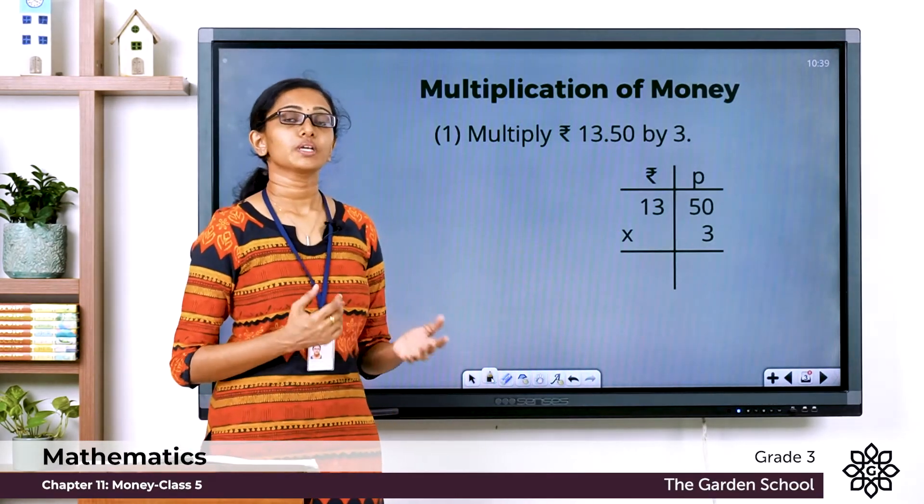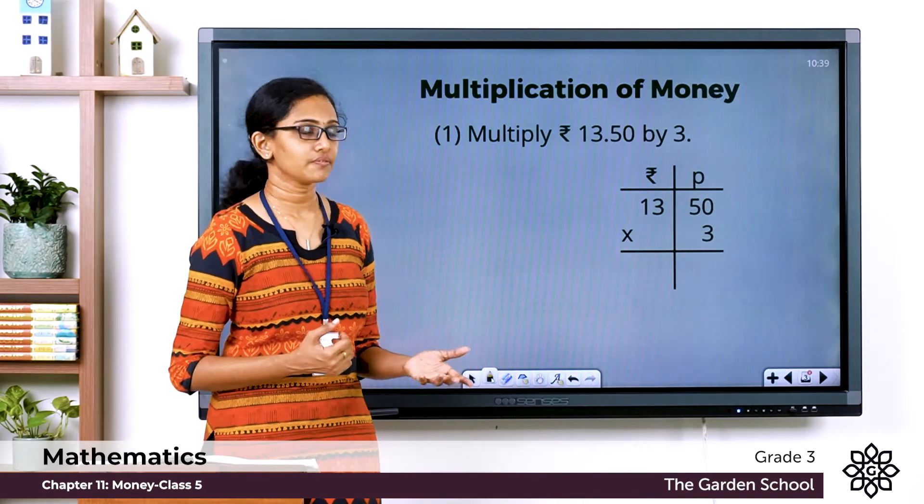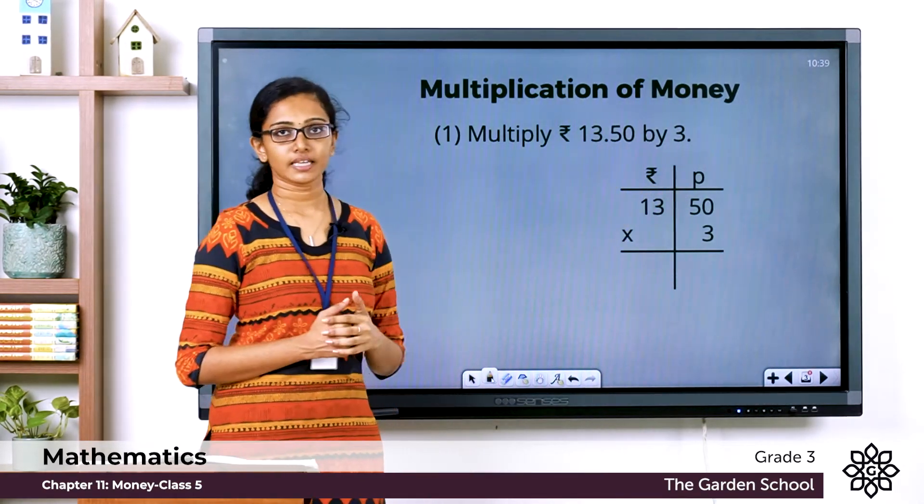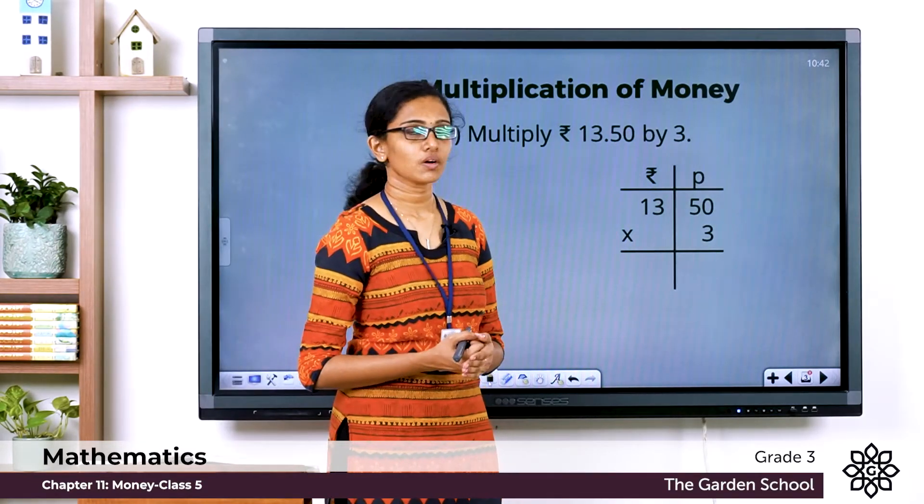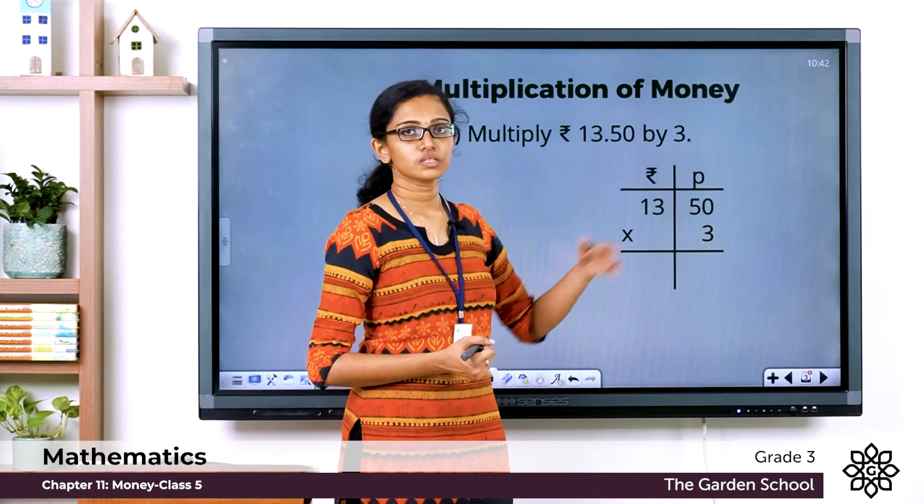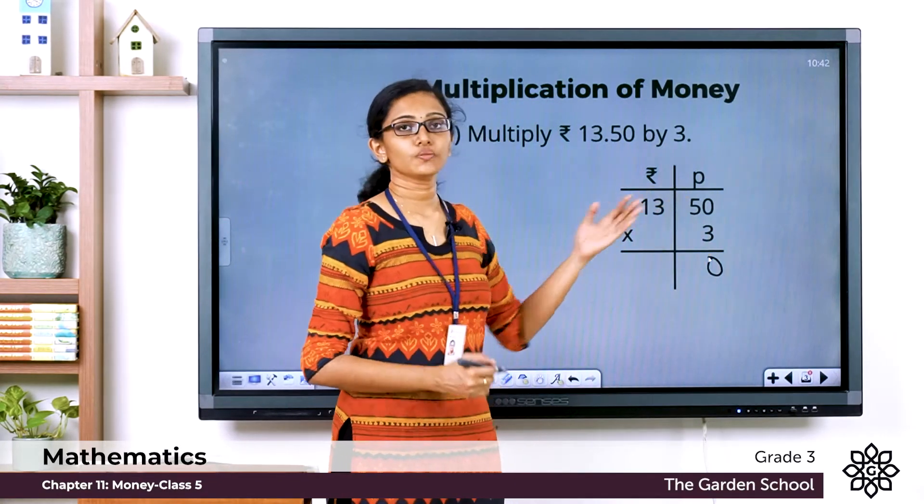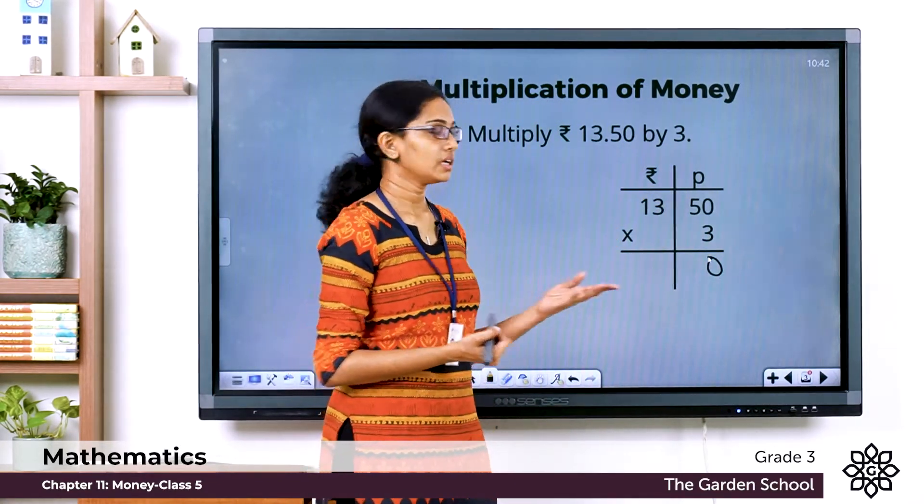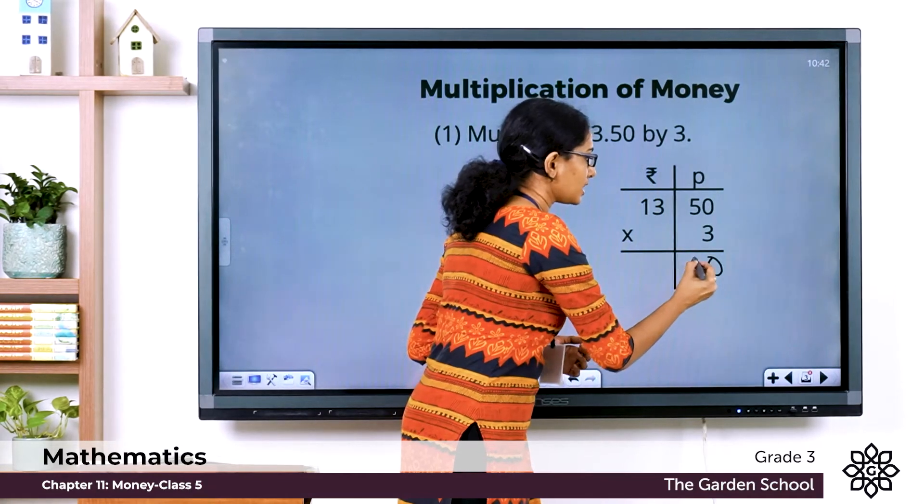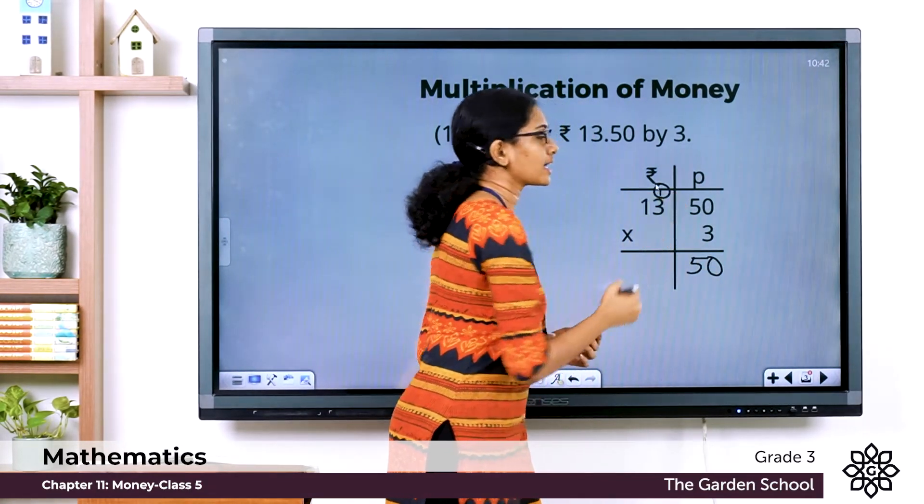We start multiplying the paisae part first. So we have written 3 in the paisae column. In the paisae column we have 3 into 0 which is equal to 0 and 3 into 5 is equal to 50. We write the 5 here and carry over 1 to the next column.